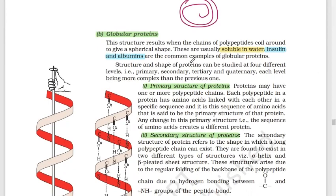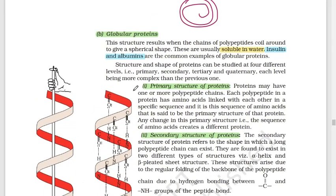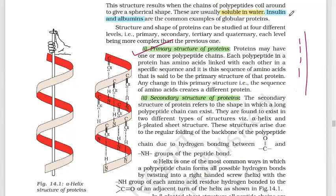The structure and shape of proteins can be studied at four different levels: primary, secondary, tertiary, and quaternary. The primary structure is the simplest — it refers to one polypeptide chain in a linear state, with no coiling or twisting. The amino acids are arranged in a specific sequence.